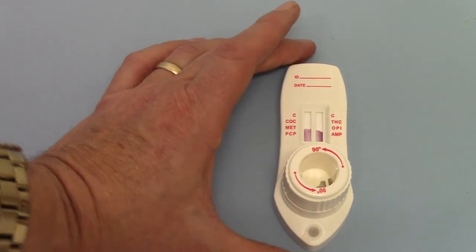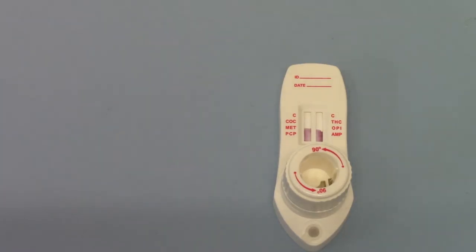So now what's happening is the test membranes are running. Obviously one will run slightly ahead of the other depending on which one was triggered first. As soon as you start the first trigger, you need your timer to start and the read time for this test is between 5 and 10 minutes.